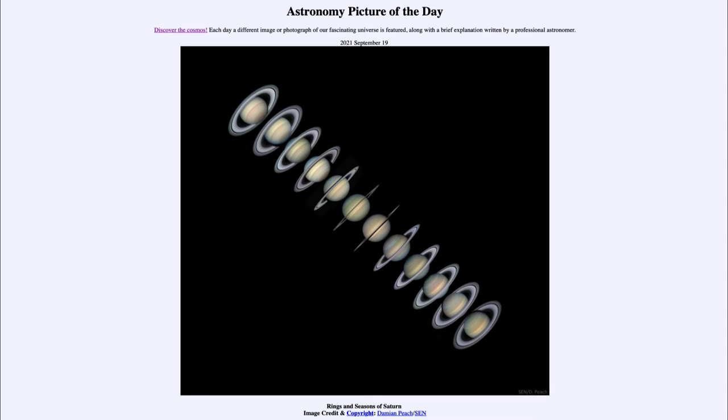Sometimes Saturn is leaning towards Earth and the sun, and that would be its northern hemisphere's summer. Sometimes it's tilted away and we see the other side of the rings, the bottom of the rings there, which would be the northern hemisphere's winter.